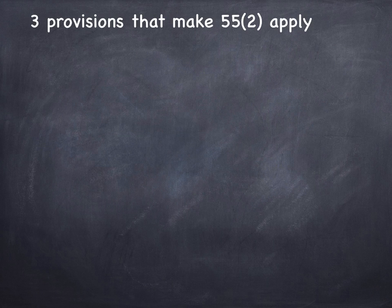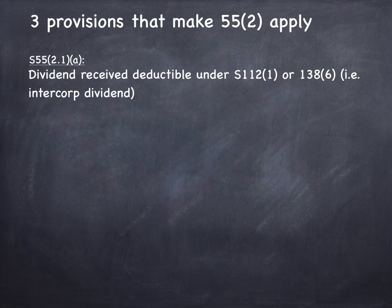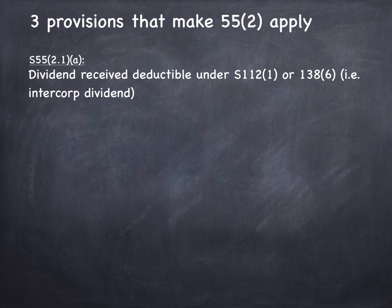There are really three provisions that make 55.2 apply. The first one is: this is not even going to be of any relevance to you unless a dividend is received that's deductible under Section 112.1 or 138.6. That's important. If you don't have two companies, if you don't have an OpCo/HoldCo type arrangement or something similar where dividends are traveling from one company to the other and are deductible under Section 112 — i.e. they're tax-free — then 55.2 has nothing to say to you.